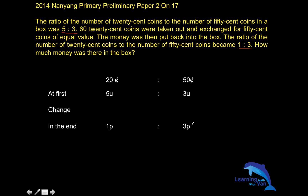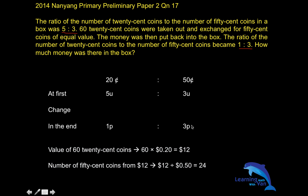Now, 60 twenty-cent coins were taken out in exchange for 50-cent coins. How many 50-cent coins were added back to the box? Before that, we have to know the value of the 60 twenty-cent coins. Easy: 60 multiplied by 20 cents gives you 12 dollars. And if we have 12 dollars, what is the number of 50-cent coins? How many groups of 50 cents do you have in 12 dollars?